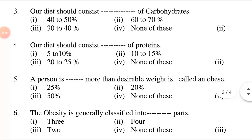Question 4: Our diet should consist ___ of proteins. Options: first, 5 to 10 percent; second, 10 to 15 percent; third, 20 to 25 percent; fourth, none of these. Answer is second option: our diet should consist 10 to 15 percent of proteins.